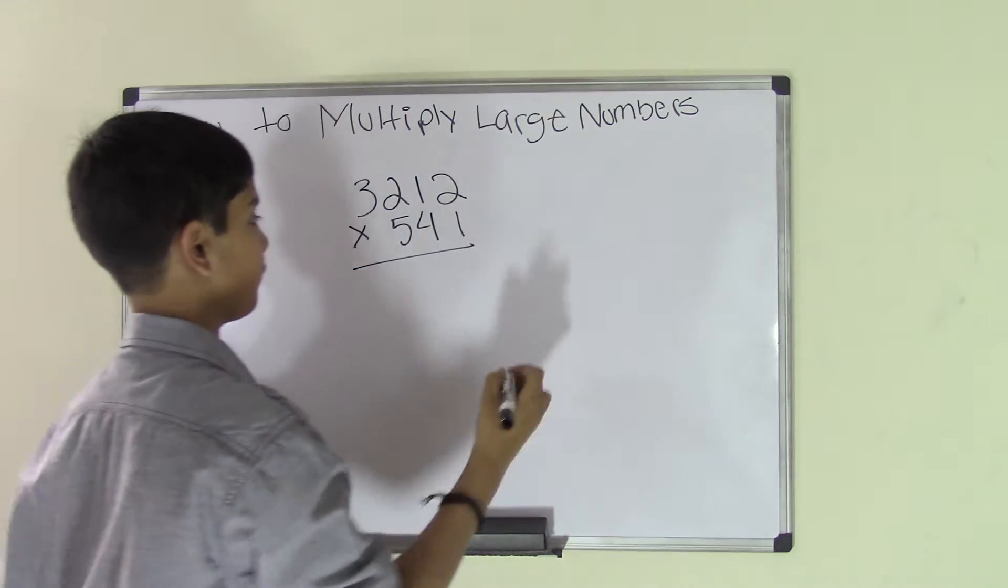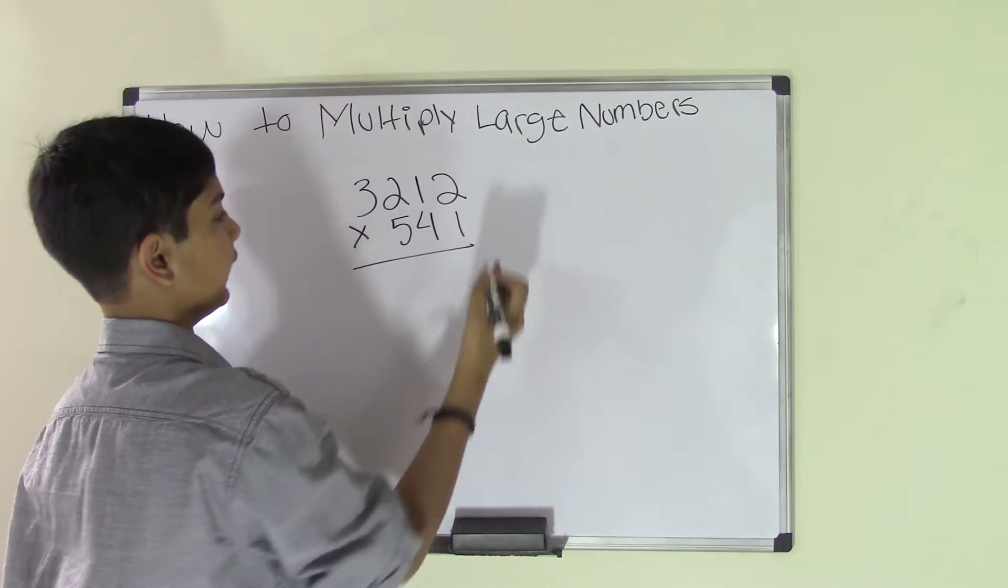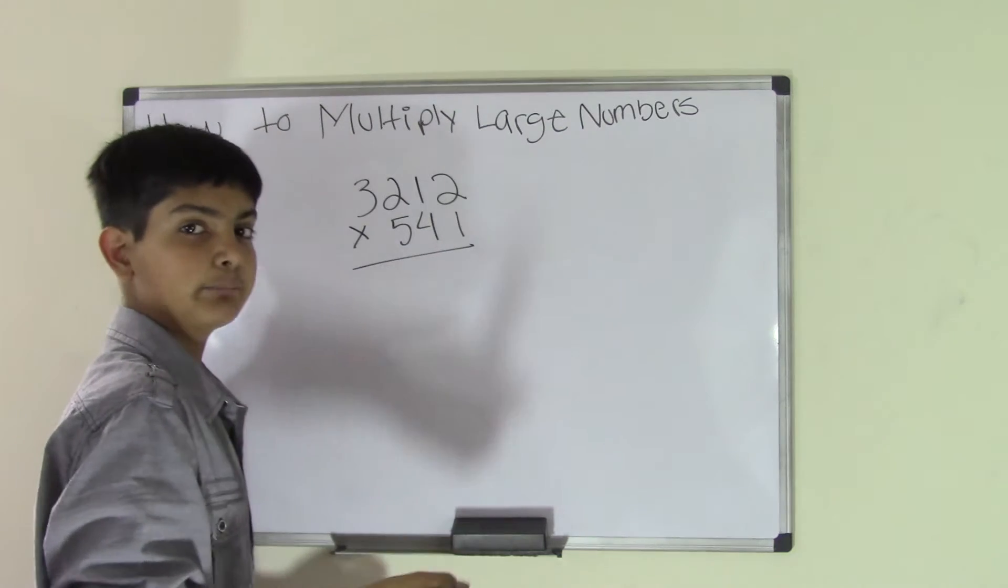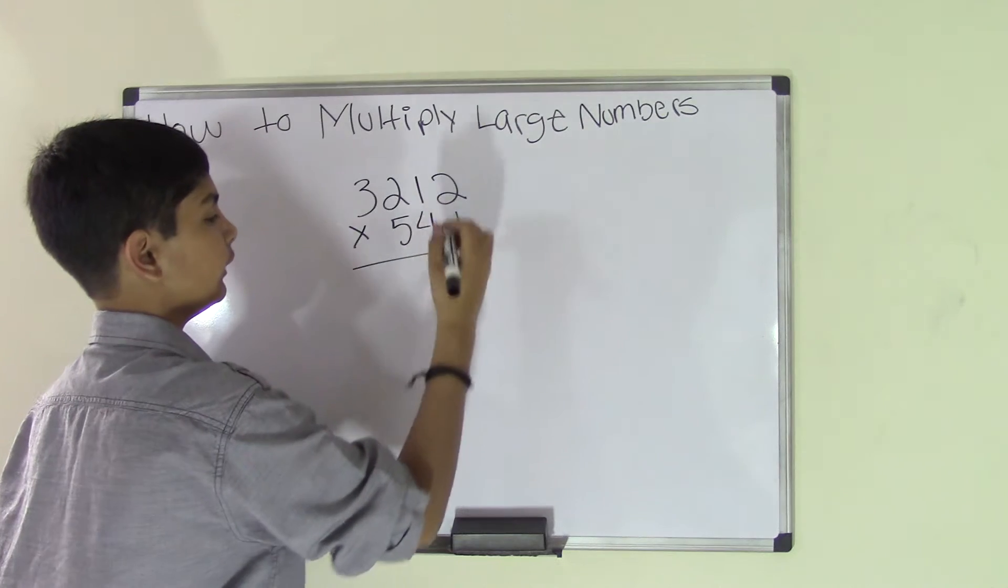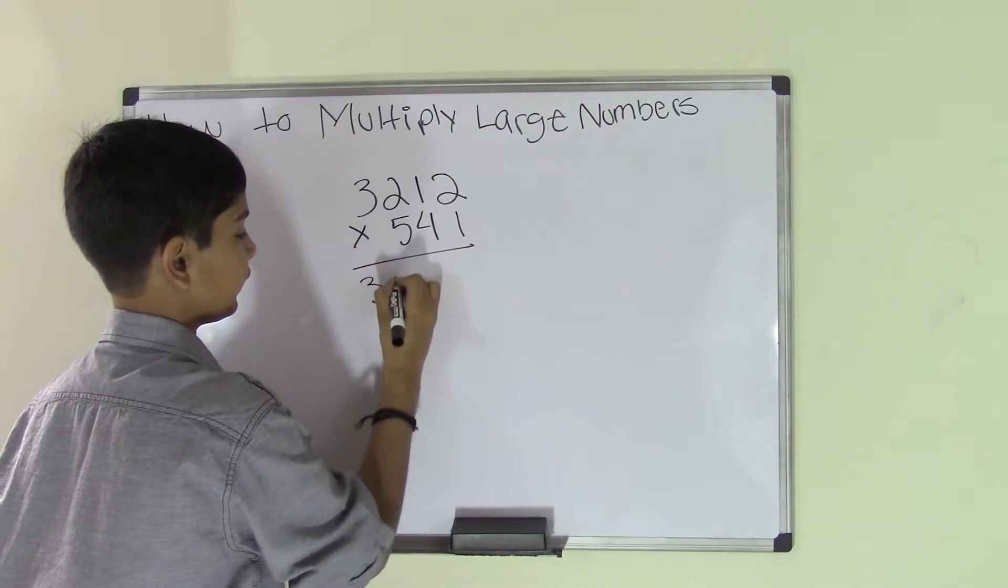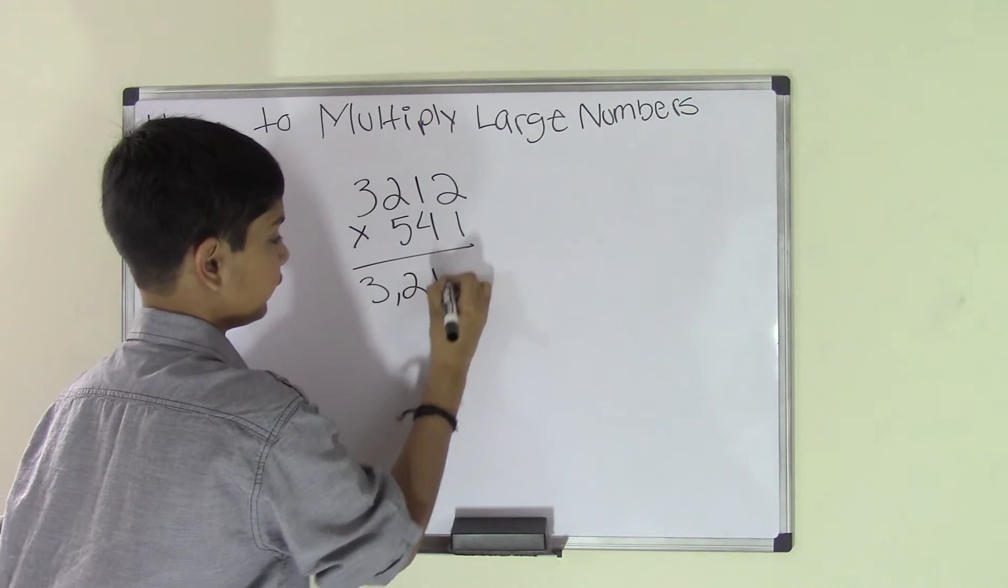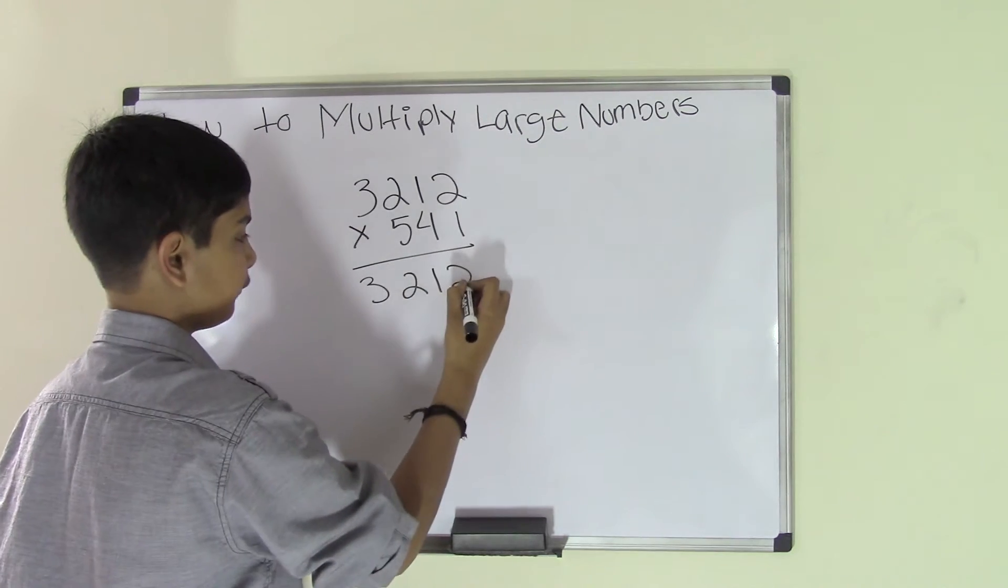To do this, we need to start from the bottom right, so we start from the 1. Since we know that 1 times any number is that number, I'll just go ahead and do 1 times 3,212, which equals 3,212. Put the comma over here, and now we move on to the next number.